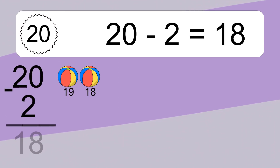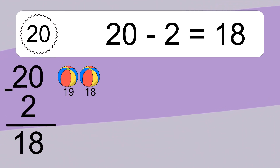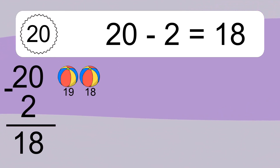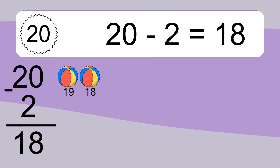20 minus 2 equals what? 20 minus 2 equals 18. Let's count it: 19, 18.